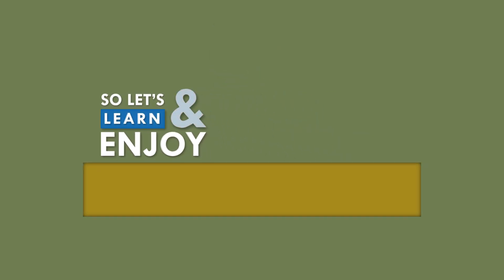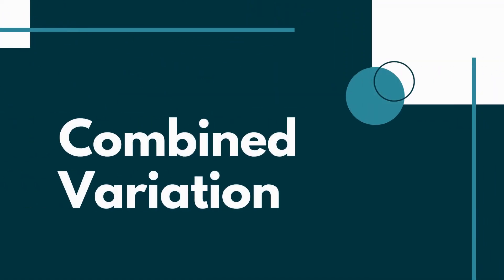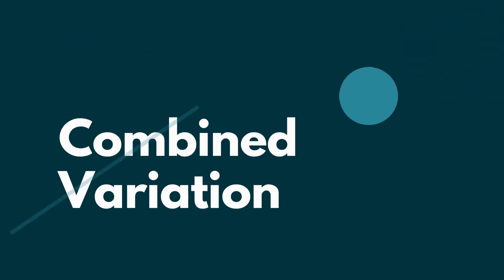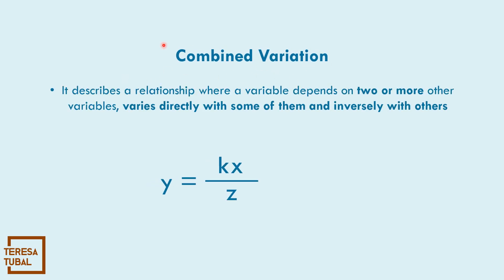Let's learn and enjoy Mathematics! Our lesson is about Combined Variation. Combined variation describes a relationship where a variable depends on two or more other variables, varies directly with some of them and inversely with others.